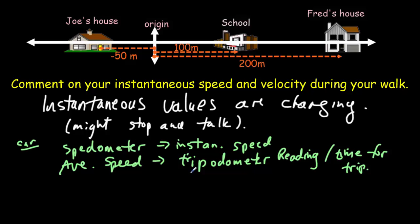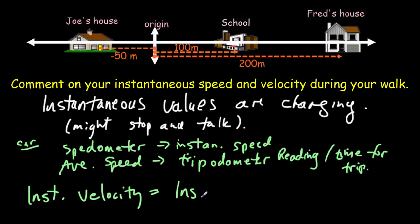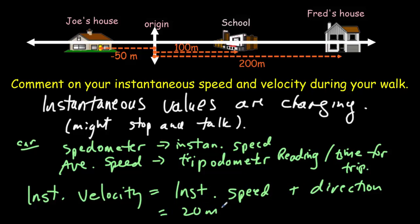Instantaneous velocity and instantaneous speed are almost the same — the only difference is that velocity includes extra information: the direction you're traveling. Instantaneous velocity equals instantaneous speed plus direction.